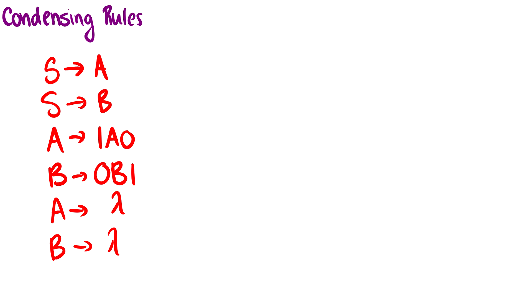Now the last thing in this video is I'm going to show you how to condense rules. Now it's not very nice if we have S goes to A, S goes to B, and these are all separate rules. We want to make them nice and compact.